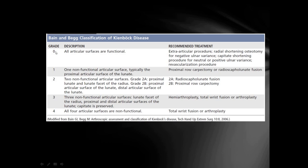The Bain and Begg classification has five stages: Stage 0 — all articular surfaces are functional; Stage 1 — one non-functional articular surface, typically the proximal articular surface of the lunate. In Kienböck's disease, the first articular surface usually involved is the proximal articular surface of the lunate.